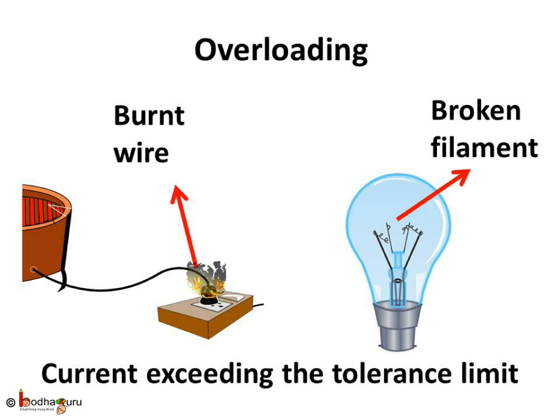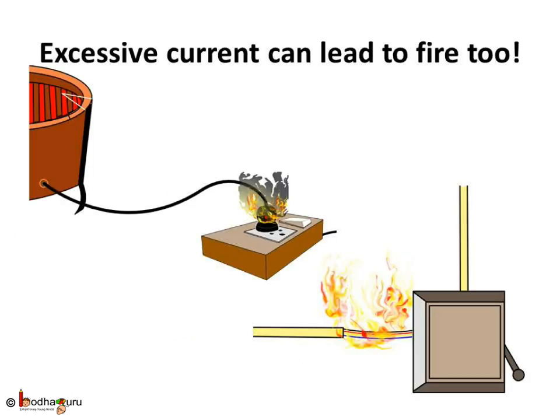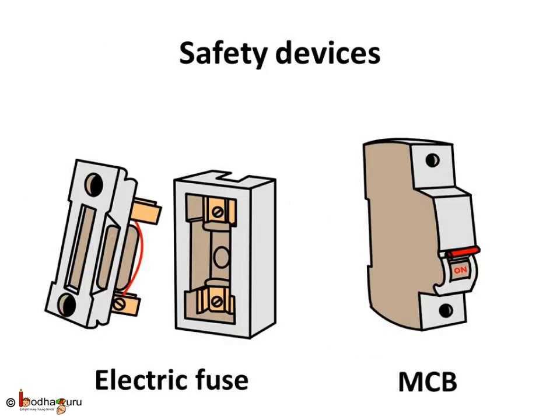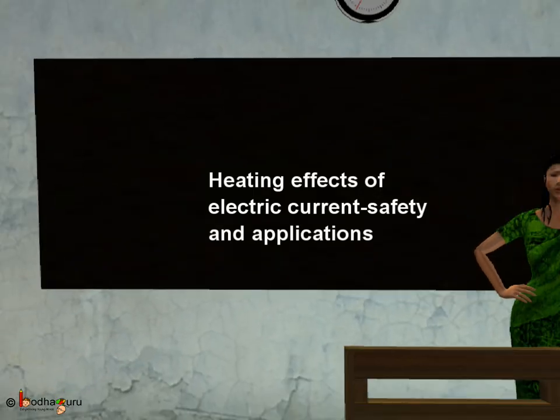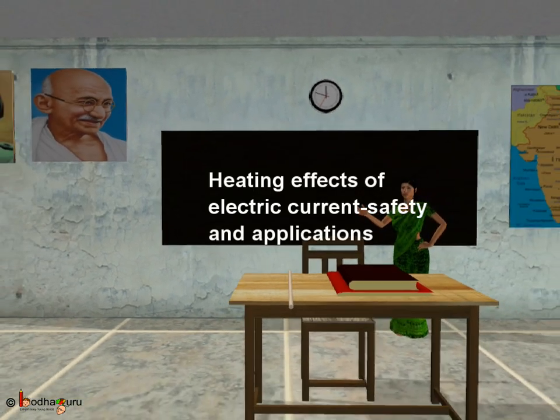To sum up, the heating effect of current can lead to hazards like burnt wires, damaged appliances, and even fire due to overloading or short circuiting. But it can be prevented most of the times. Various safety devices like fuse and MCBs are used to prevent this. The heating effect of current is not always undesirable — we make use of it in room heaters, heaters used for cooking, and irons used for ironing clothes. That was all about the heating effect of electric current. Bye bye kids!